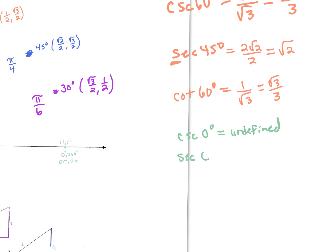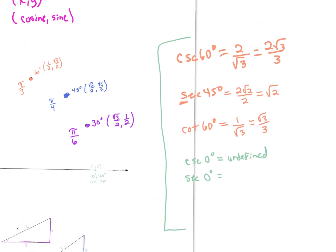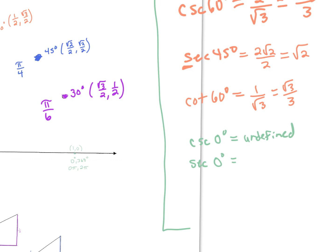Secant of 0 degrees: secant is the reciprocal of cosine, so we look at the x-coordinate and flip it. At 0 degrees x is 1, so think of it as 1/1. Flip that and you still get 1.